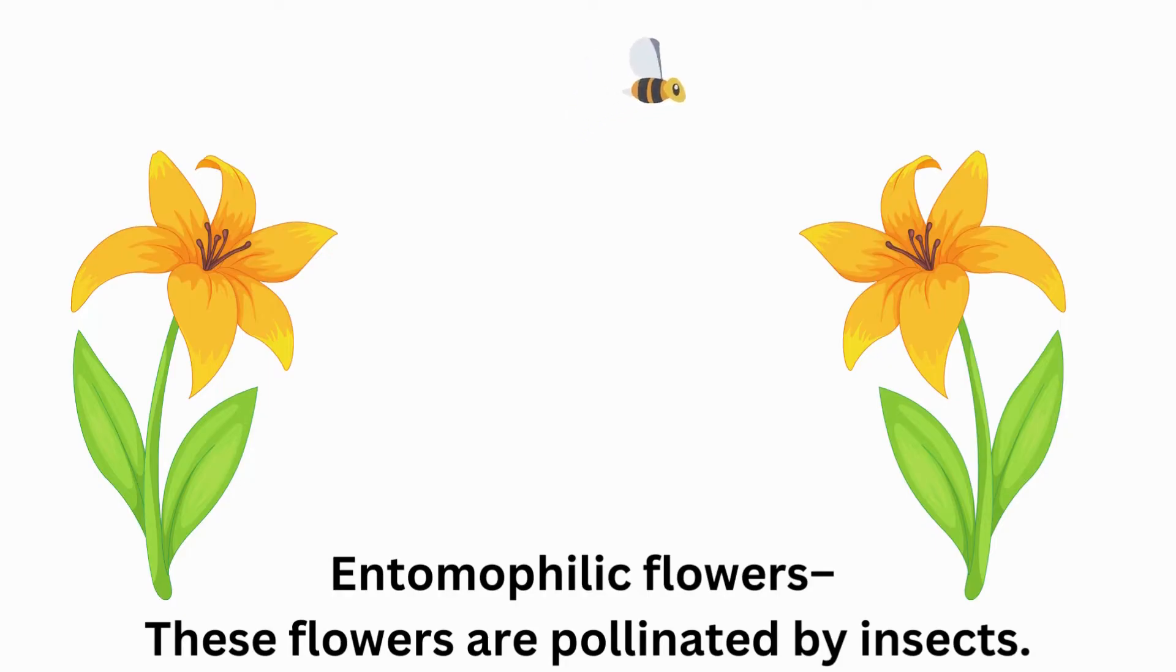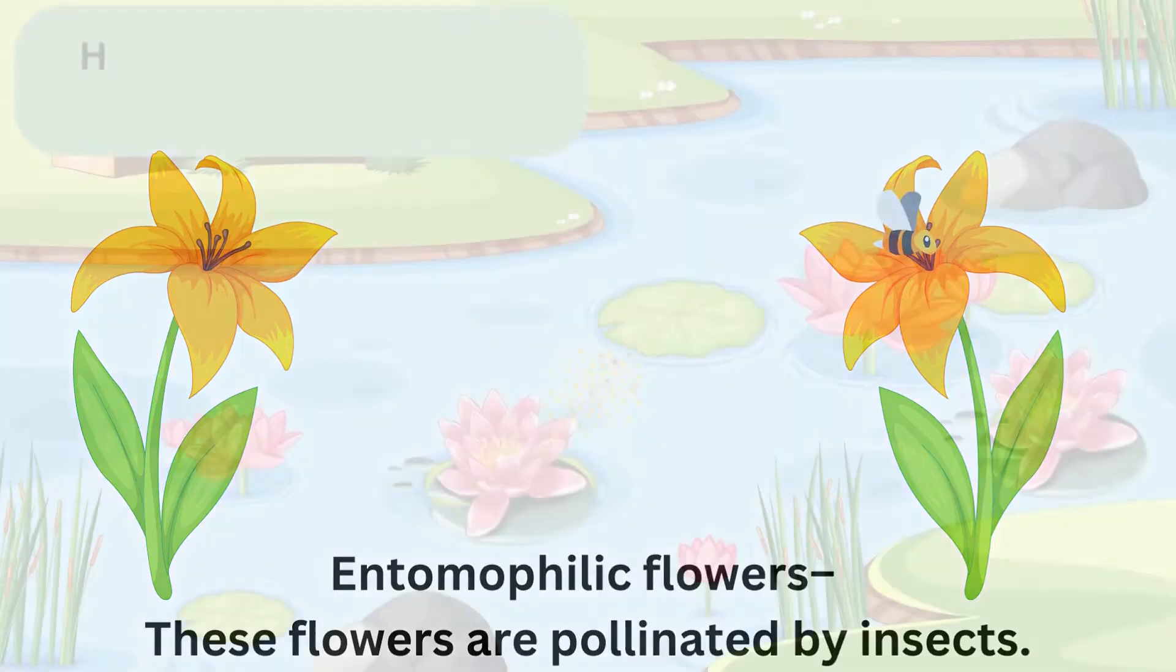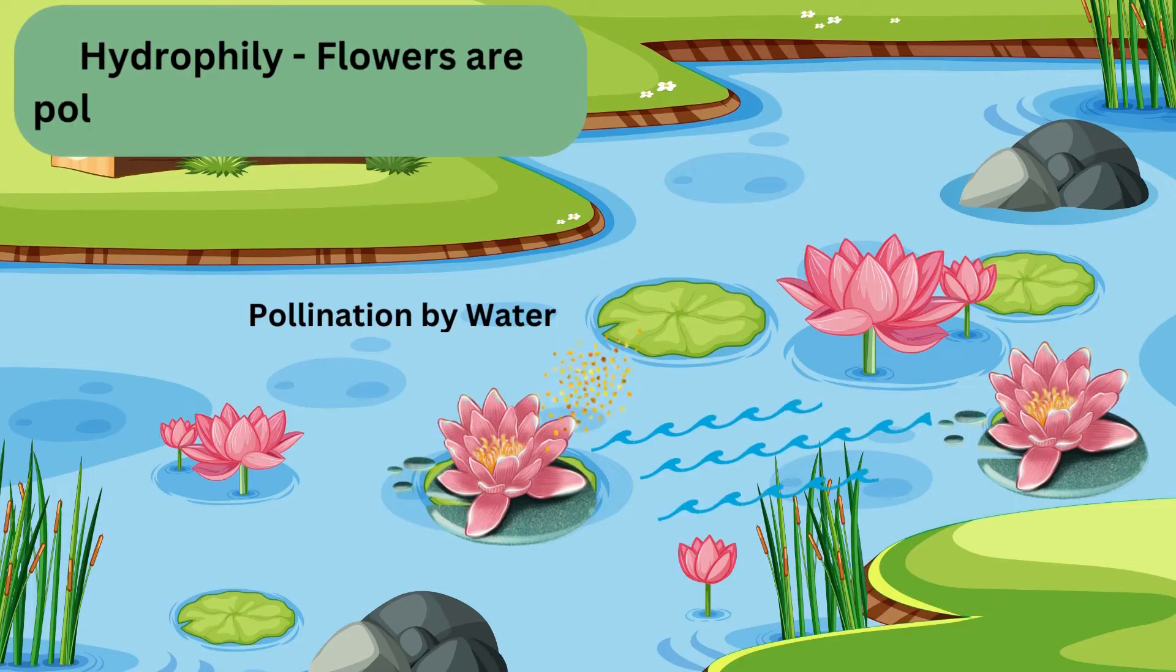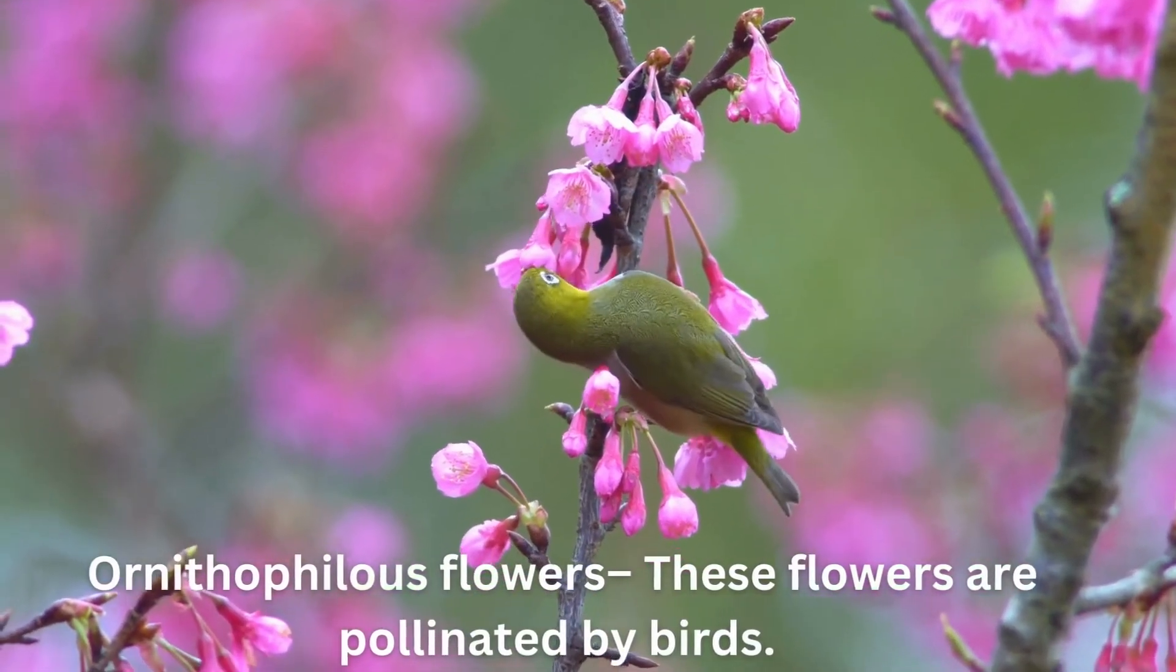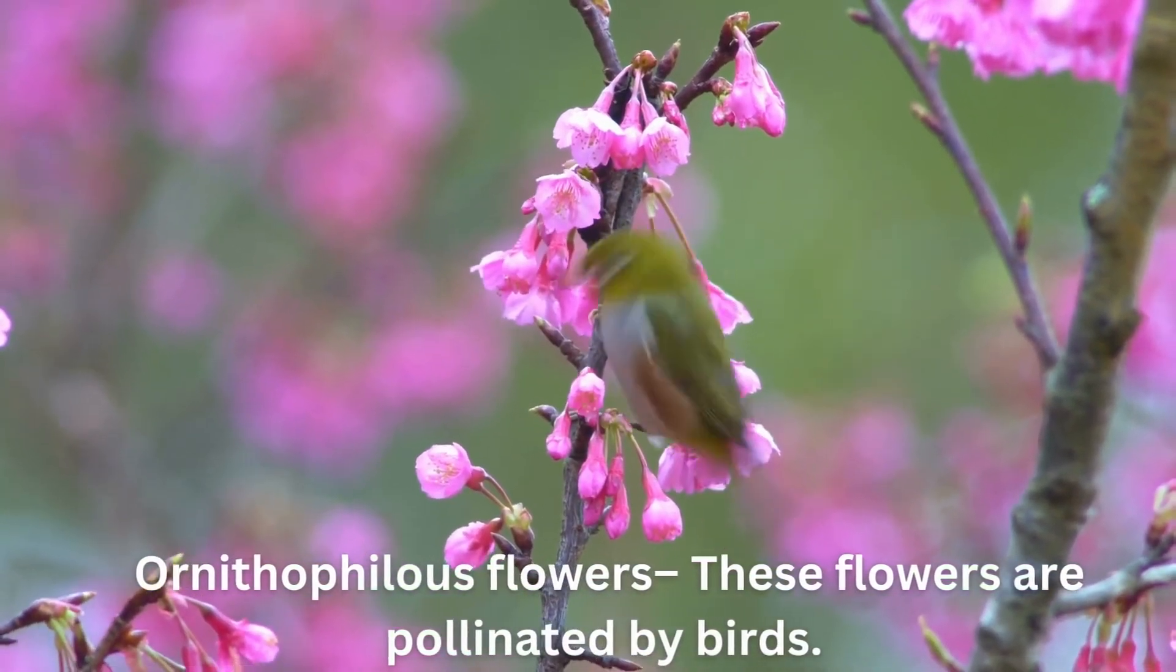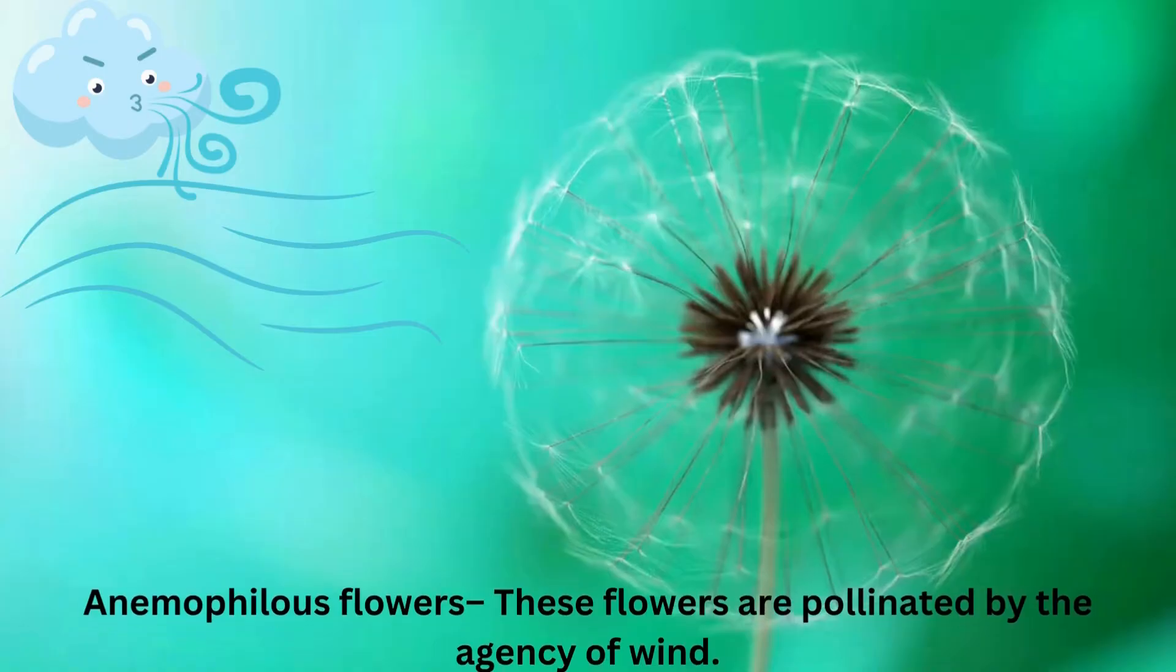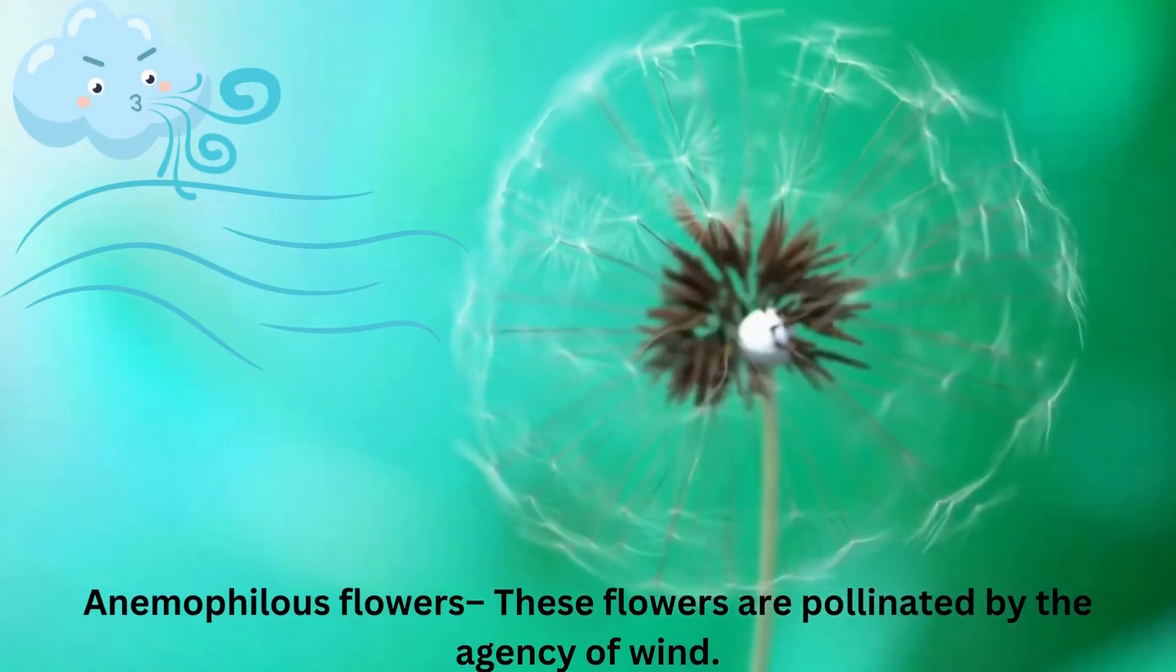It can be pollinated first, entomophilic flowers, pollinated by insects. Second, hydrophilous flowers, pollinated by water. Third, ornithophilous flowers, pollinated by birds. Fourth, anemophilous flowers, pollinated by the agency of wind.